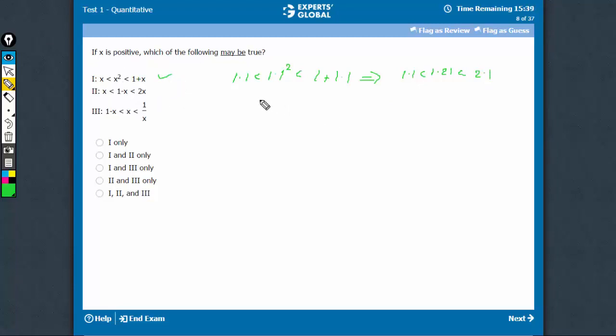In the second case, this is possible for small positive values of x, for example 0.4. So 0.4 is less than 1 minus 0.4 is less than 2 into 0.4. See, this becomes 0.4 less than 1 minus 0.4, which is 0.6 less than 2 into 0.4, which is 0.8.